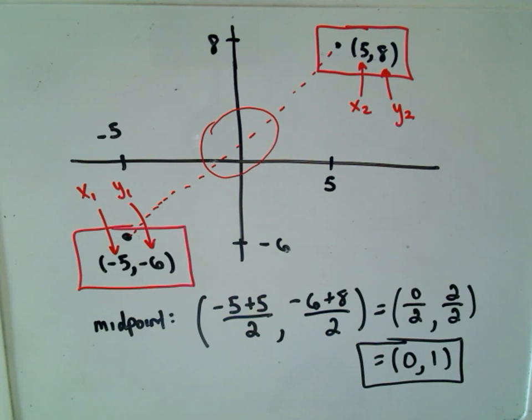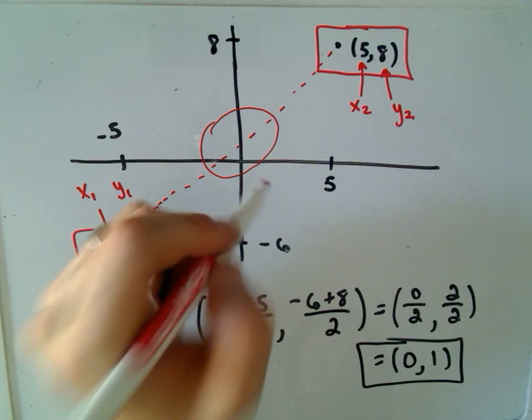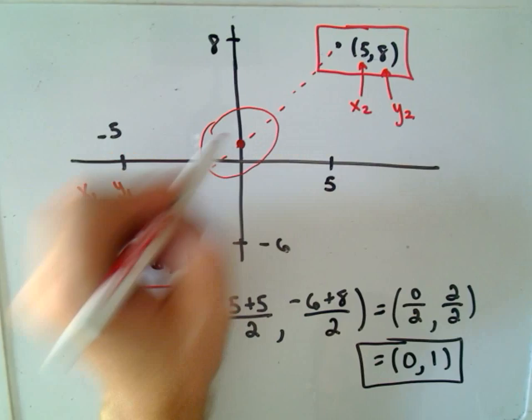And to me, that seems reasonable. 0, 1, hey, that would be a point right on the y-axis. So that seems correct.